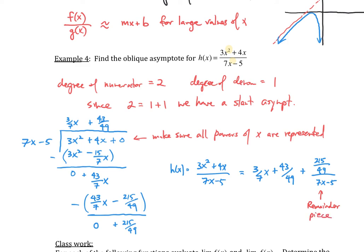And this remainder piece, this guy goes to 0 as x gets big. So that part is going to disappear. So the part that's not the remainder piece, this 3 over 7x plus 43 over 49, this piece is our slant asymptote.